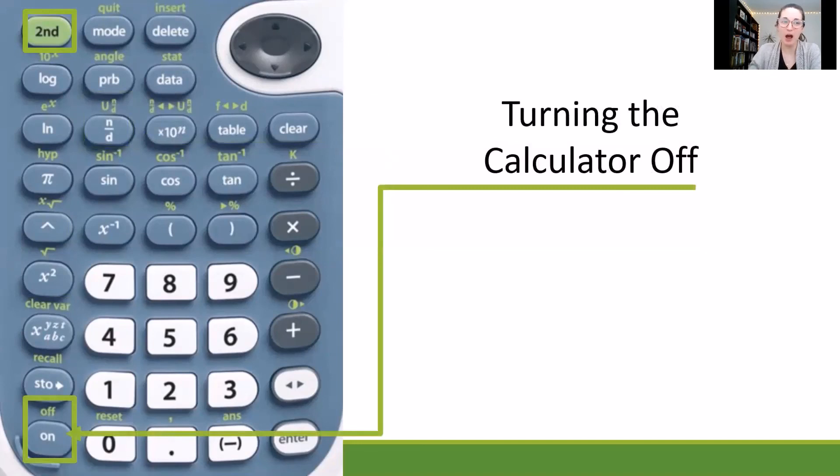Now turning the calculator off is our last piece here. So in order to do that, we'll also need that second button, but you'll see that on button doubles as an off button when we use second.